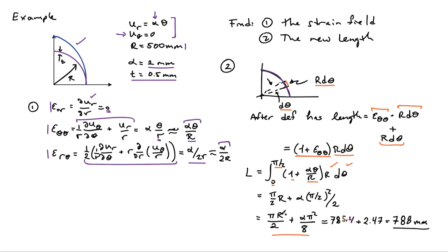So pi r over 2 that is the original length. We can call that L_0. And the change in length is given by alpha pi squared over 8. And so if we evaluate those numbers then we find the new length of the band to be 788 millimeters.